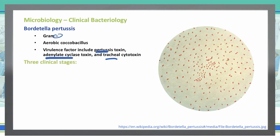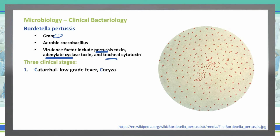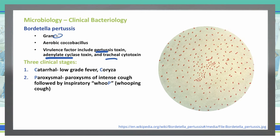It has three separate clinical stages. The first is the catarrhal stage, where we see a low-grade fever and coryza — inflammation of the mucous membranes, particularly in the nose, often seen in people with colds or hay fever. The second is the paroxysmal stage, with paroxysms of intense cough followed by an inspiratory whoop — that's where the 'whoop' in whooping cough comes from. The third stage is convalescent, characterized by gradual recovery from that chronic cough.